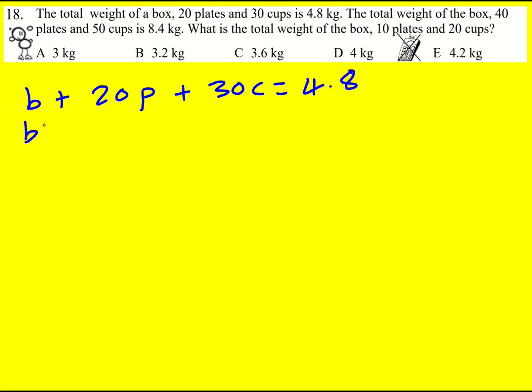And we're told the weight of the box plus 40 plates plus 50 cups is 8.4. And what we're trying to get, write it down here, is the box plus 10 plates plus 20 cups.